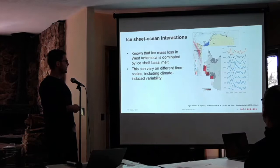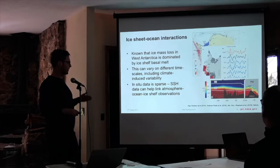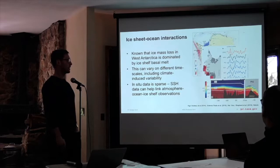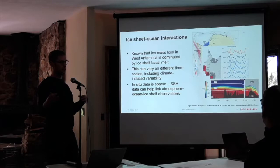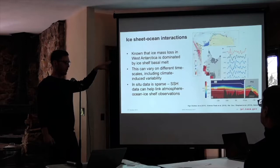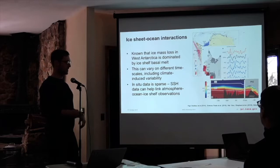This is Pierre Dutrieux's figure showing that you get more or less circumpolar deep water infiltrating into those ice shelf cavities under El Niño conditions versus La Niña conditions. The good thing about the sea surface height data is we can now start to link the ice shelf observations with those in-situ observations, mediating through the atmosphere and the sea ice, building a more coherent picture of the linkages between atmospheric variability and basal melting in the ice shelf cavities.